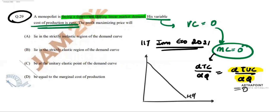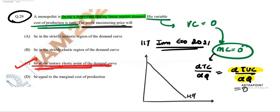So the monopolist will have a profit maximizing price such that demand is unit elastic. The demand curve is unit elastic exactly at its midpoint. Therefore, the profit maximizing price will be at the unitary elastic point of the demand curve.